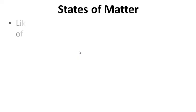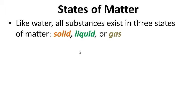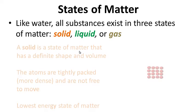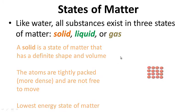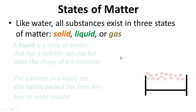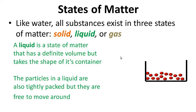States of matter. Like water, all substances exist in three states of matter: solid, liquid, or gas. A solid is a state of matter that has a definite shape and volume. The atoms are tightly packed, more dense, and are not free to move around for the most part. It's the lowest energy state of matter. A liquid is a state of matter that has a definite volume but takes the shape of its container.